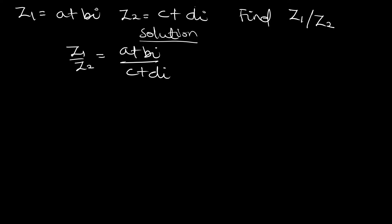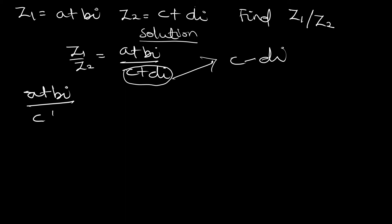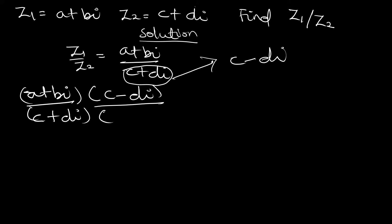When you have two complex numbers dividing like this, what you have to do is find the conjugate of the denominator. Here the denominator is c plus di, and its conjugate is c minus di. You then multiply both the numerator and the denominator by that conjugate, and simplify. So we get a plus bi over c plus di, multiplied by c minus di over c minus di.